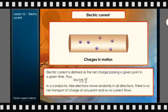Electric current is defined as the net charge passing a given point in a given time. Thus, I(t) equals limit delta t tends to 0, delta q divided by delta t. In a conductor, free electrons move randomly in all directions. There is no net transport of charge at any point and so no current flows.